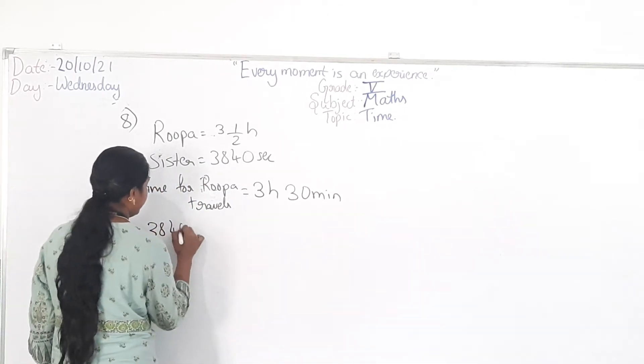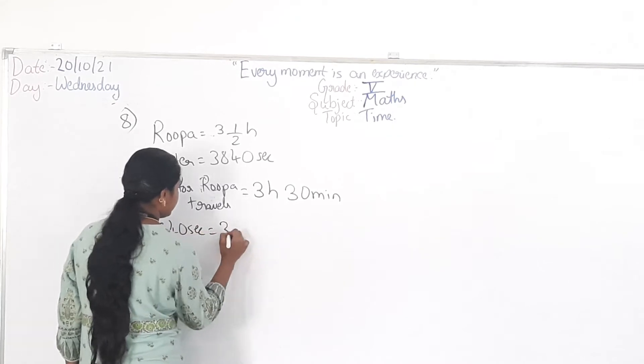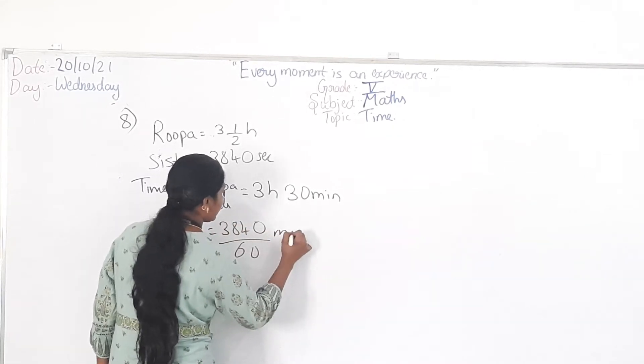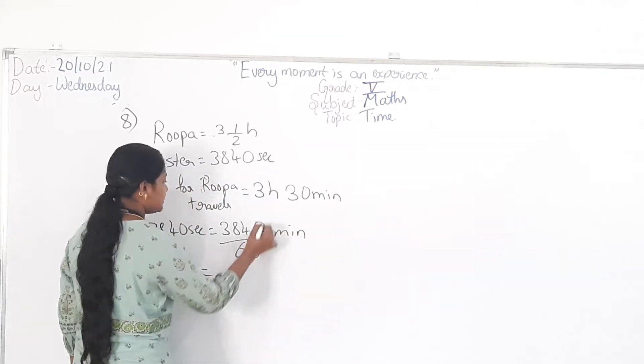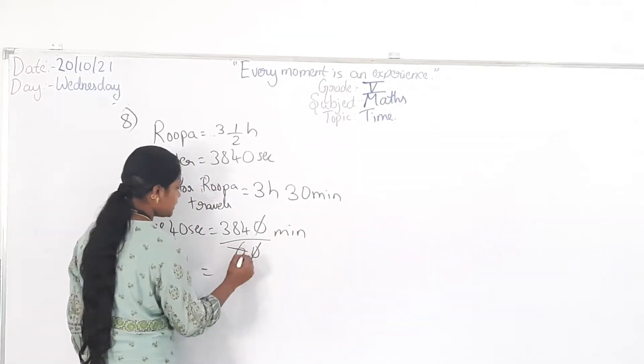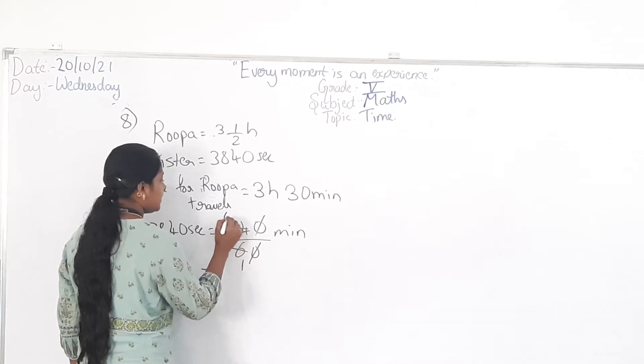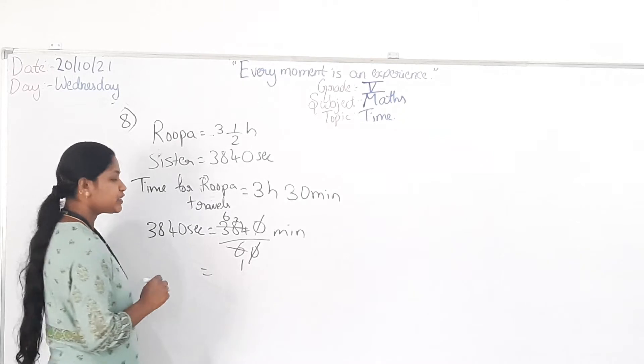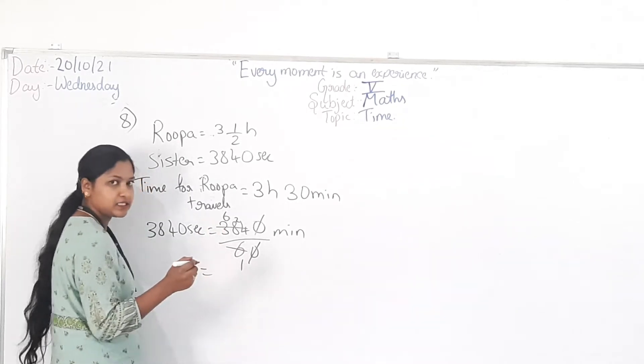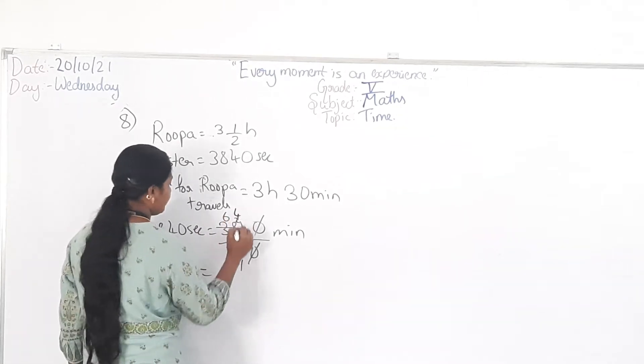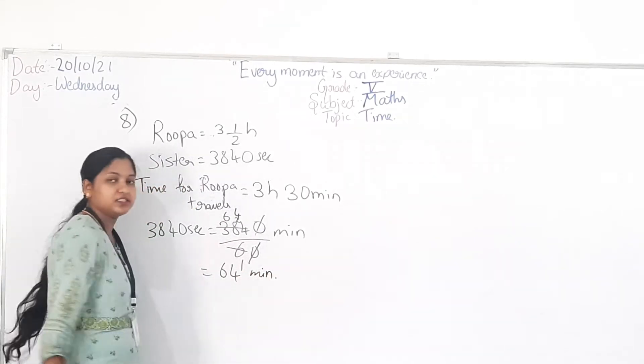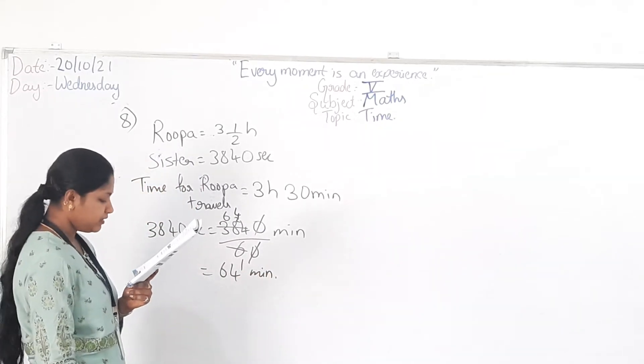For 3840 seconds. That is 3840 divided by 60 minutes. So cancel the zeros. 60 sixes, 1 hour plus 24. So it is 64 minutes. Got it, friends?